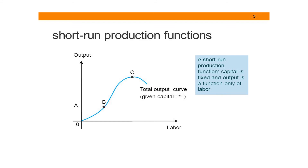This graph diagrammatically represents the short run production function, where capital is fixed and output is only a function thereof. The total output curve at point C represents the maximum that the firm can produce with a given output and labor. At point B, there is a steady increase in productivity with a combination of output and labor. After point C, output starts to drop due to the law of diminishing marginal returns, which we will cover later in this presentation.